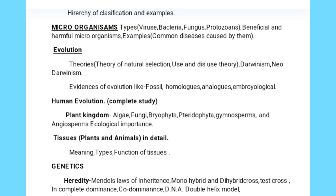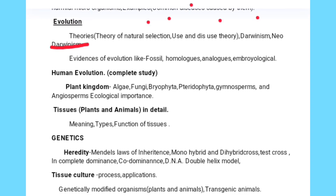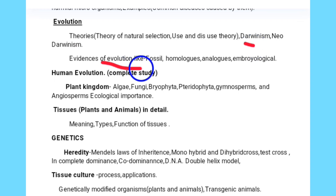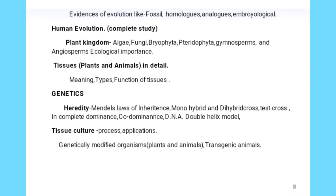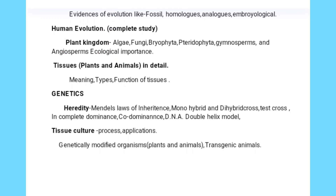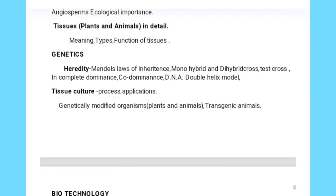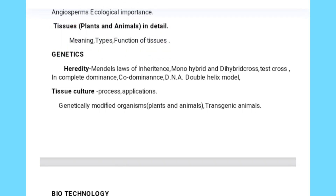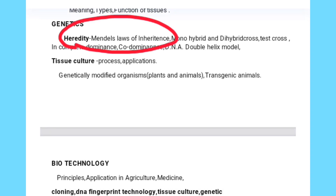Moving to evolution: theories of evolution including Darwinism and Neo-Darwinism, and evidences of evolution such as fossils, homologous and analogous organs. Human evolution is also a complete study topic. From the plant kingdom: algae, fungi, Bryophyta, and related phyla — important points on all of these are mentioned. Tissues in plants and animals — meaning, types, and functions — require detailed study. Genetics is a very important chapter, covering heredity and Mendel's laws of inheritance.